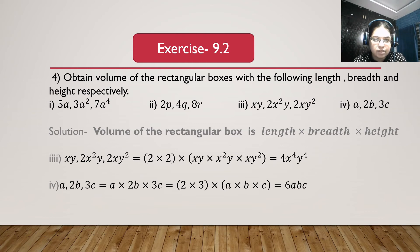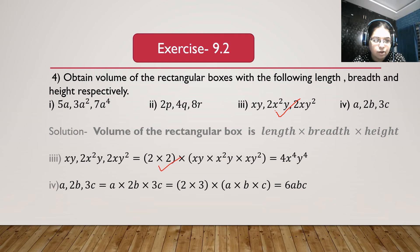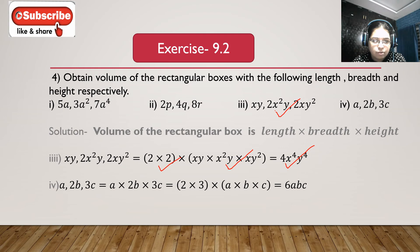Third bit: xy, 2x square y and 2xy square. Volume is xy multiplied with 2x square y multiplied with 2xy square. 2 multiplied with 2 is 4. x multiplied with x square multiplied with x is x to the power 1 plus 2 plus 1, which is x to the power 4. y multiplied with y multiplied with y square is y to the power 1 plus 1 plus 2, which is y to the power 4. So we get 4x to the power 4 y to the power 4.